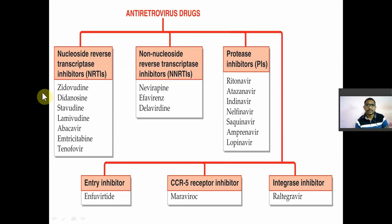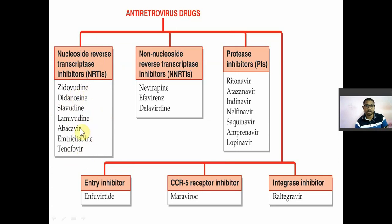For nucleoside reverse transcriptase inhibitors, the drugs to remember are: Zidovudine, Didanosine, Stavudine, Lamivudine, Abacavir, Emtricitabine, and Tenofovir. The trick to remember them: '-udine' pattern — Zidovudine, Stavudine, Lamivudine — plus Abacavir, Emtricitabine, Tenofovir, and Didanosine. You can remember with the formula: '-udine × 3 + others'.